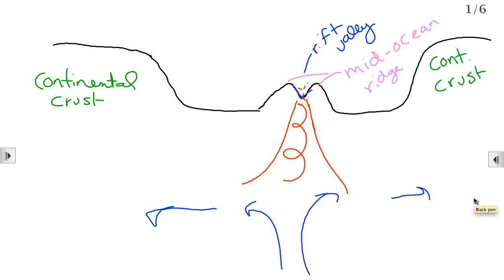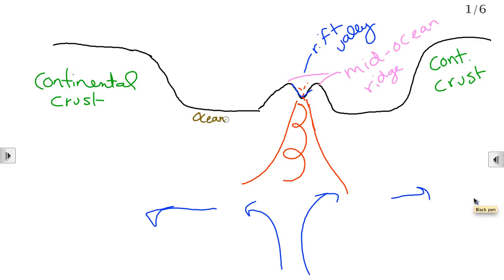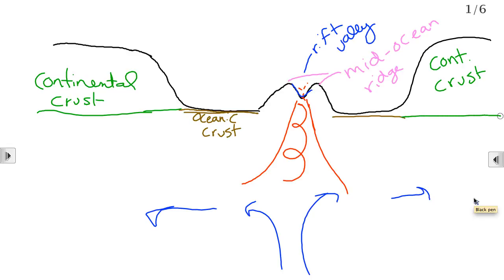Notice that the continental crust is very thick and the oceanic crust is pretty thin. Your continental crust may be 30 miles thick; your oceanic crust may be three miles thick. That's why the ocean is a hole in the ground — the oceanic crust is really thin, the continental crust is really thick, so you have a hole, and when it rains water goes downhill. That's why you have an ocean.